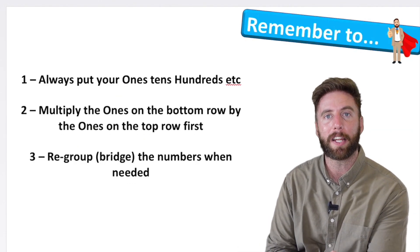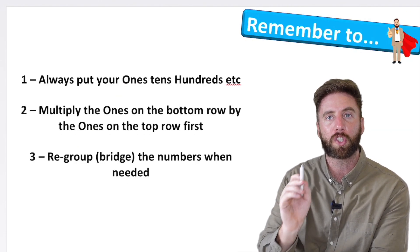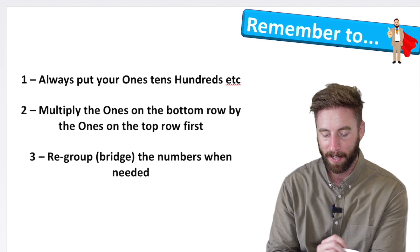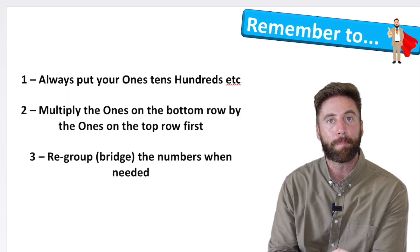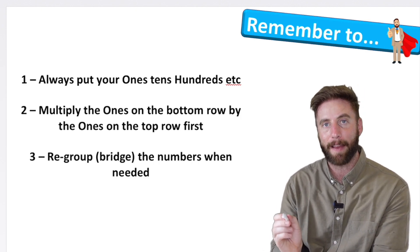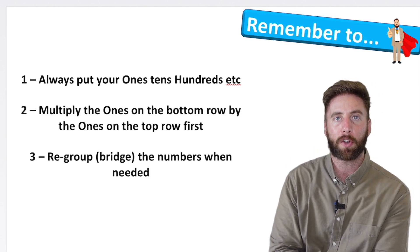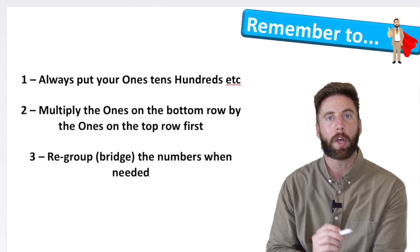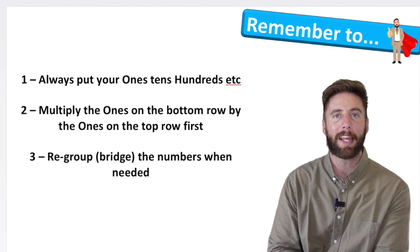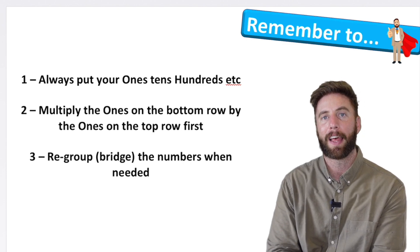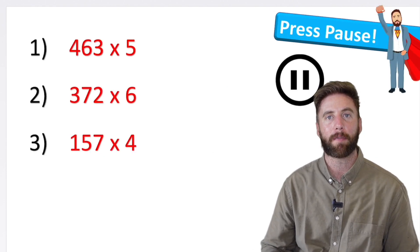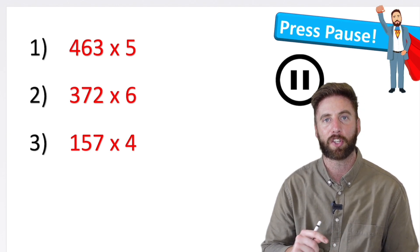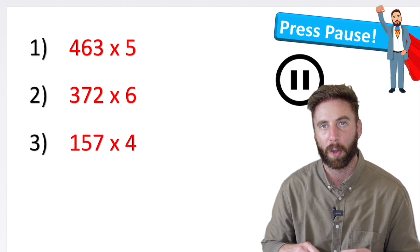So let's have a look at the things that we need to remember. We need to remember to always put our ones, tens and hundreds on the top of our columns so that we don't put a number in the wrong place. Then we're going to multiply the ones on the bottom row by the ones on the top row, and then work our way along the place value chart step by step. If we need to regroup because we end up with a two-digit number, we're going to put one of those digits above the row in the next column so we can add it on later. Here's your time to press pause on this video — try and work out these three questions and put the answers in the comment section so that I can mark every single one. Good luck, press pause now.